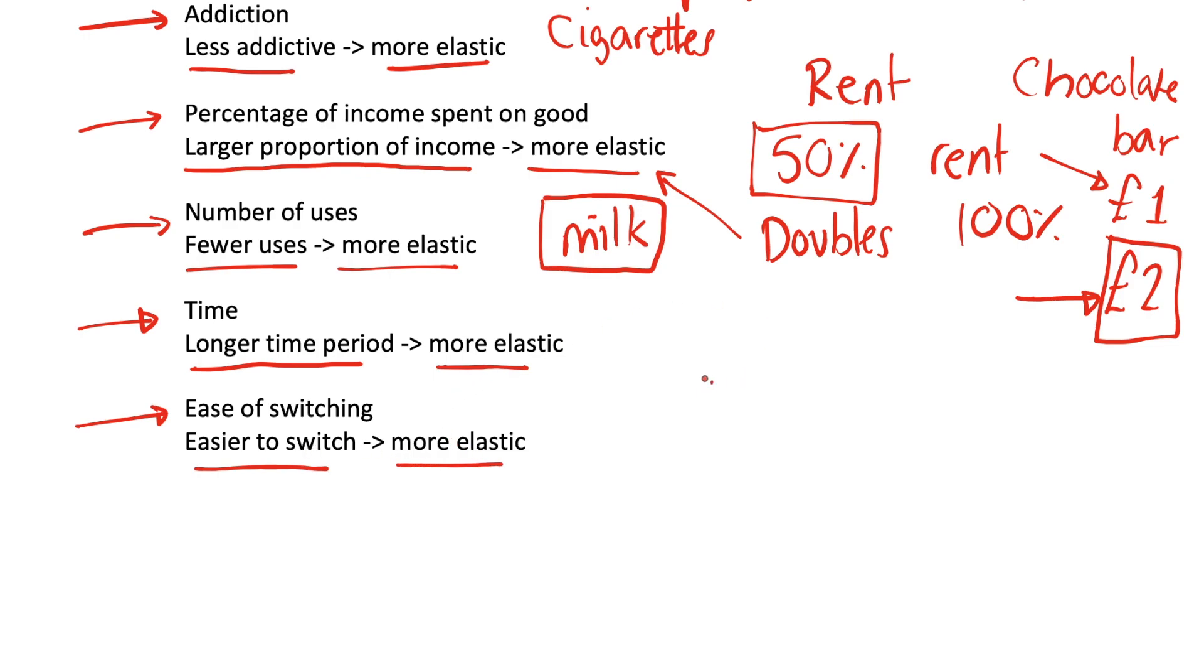And so an example that we used before was that if there are lots of supermarkets, if it's very easy to switch to a different supermarket, like you just go to a different one down the road, then it's going to be more elastic. And if one supermarket increases its prices, you can just go to a different one. However, if it's very difficult to switch and there isn't another supermarket nearby, then it's going to be more inelastic because there are no other options. And so this is sort of linked to the time idea.